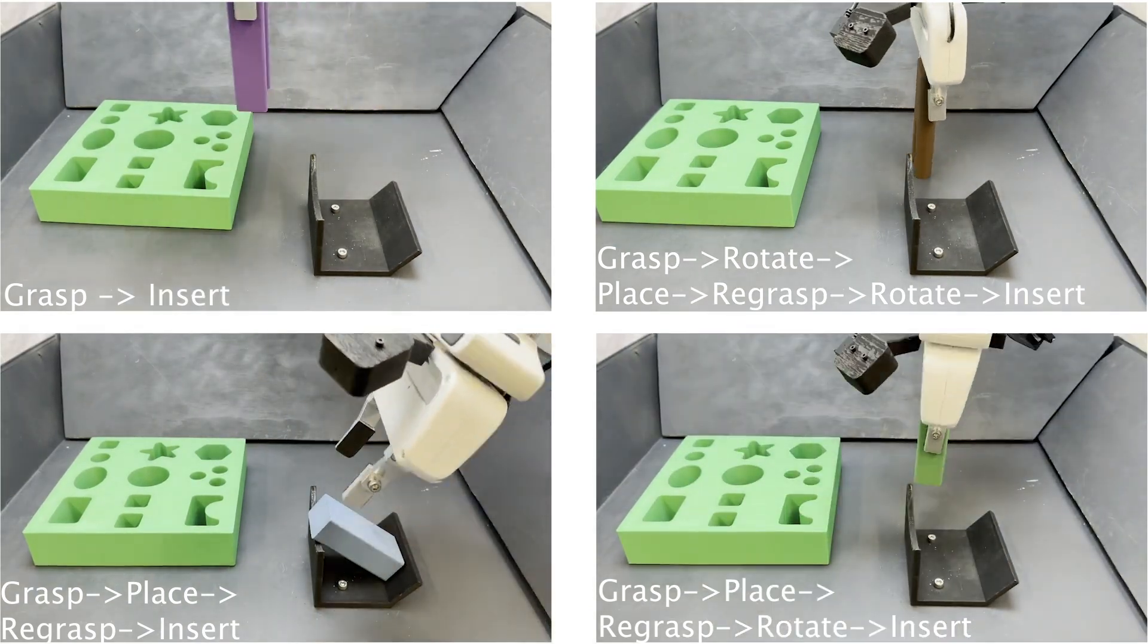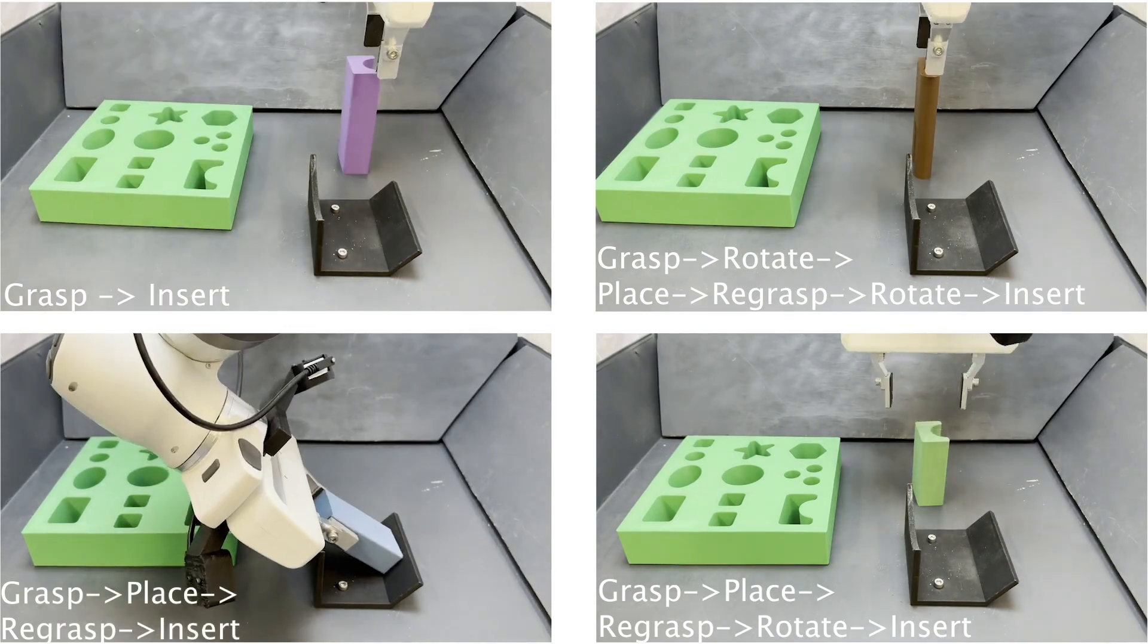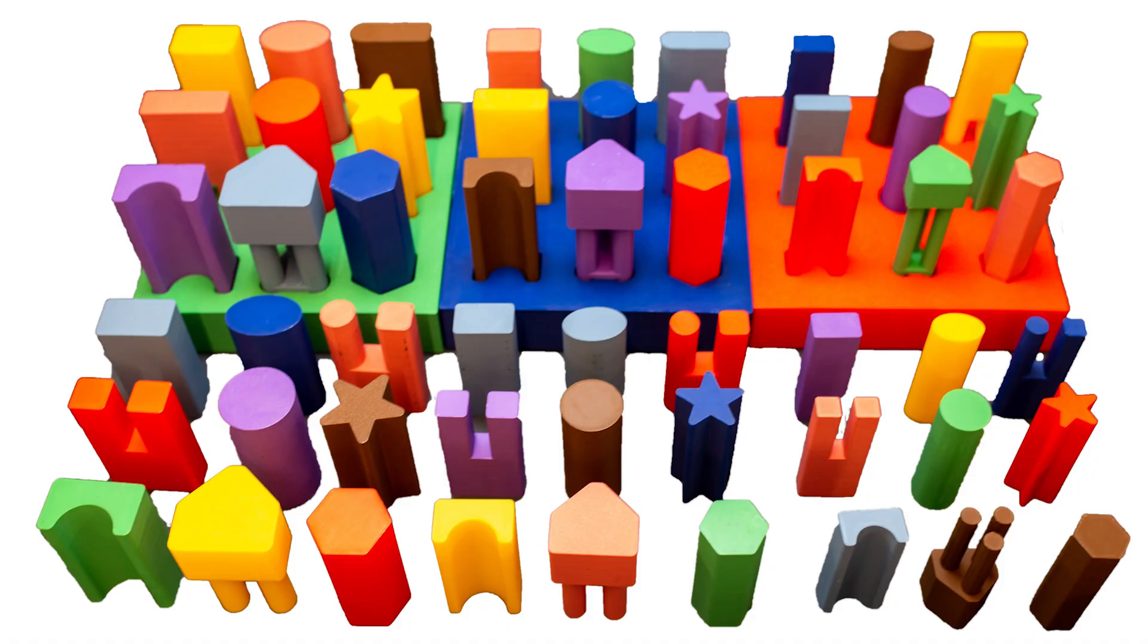Researchers can study either individual skills or the entire end-to-end task. This portion of the benchmark consists of 54 manipulation objects of various sizes, shapes, and colors, as well as three boards for insertion.